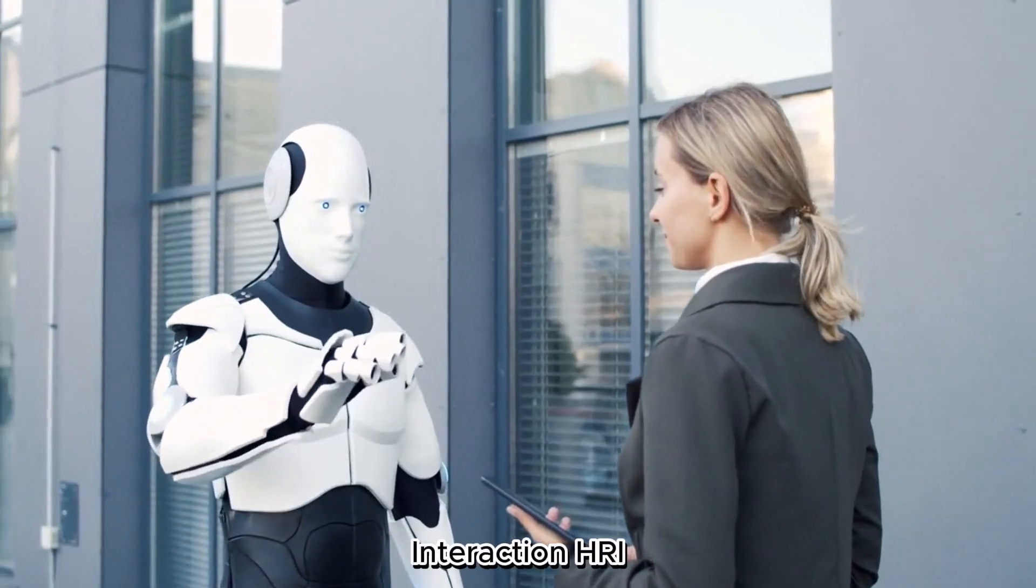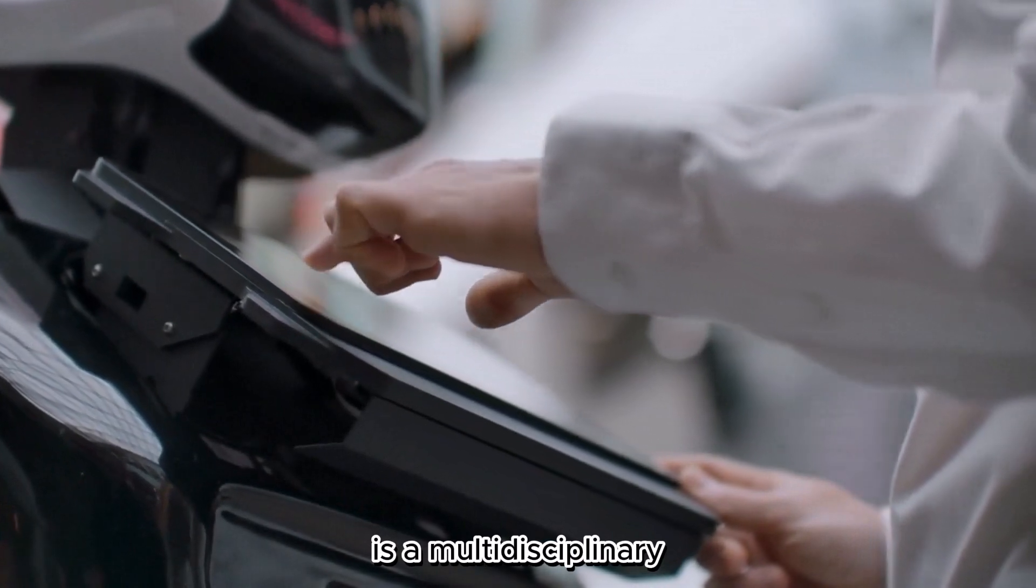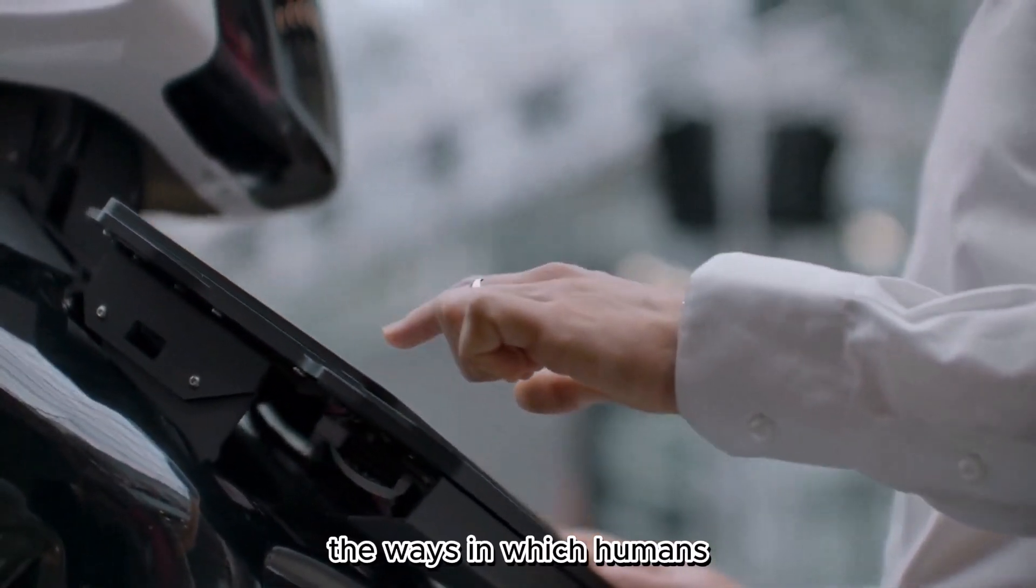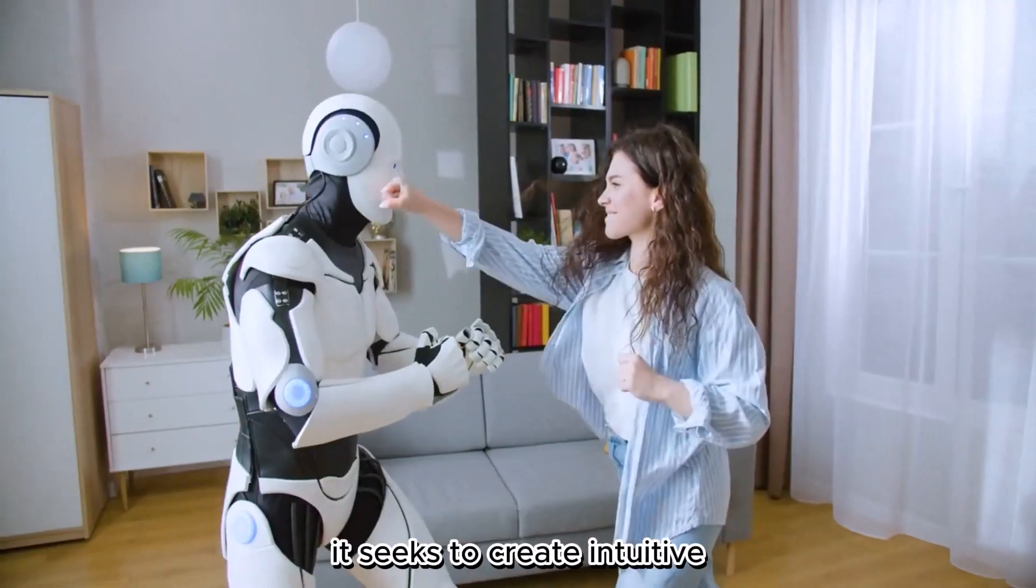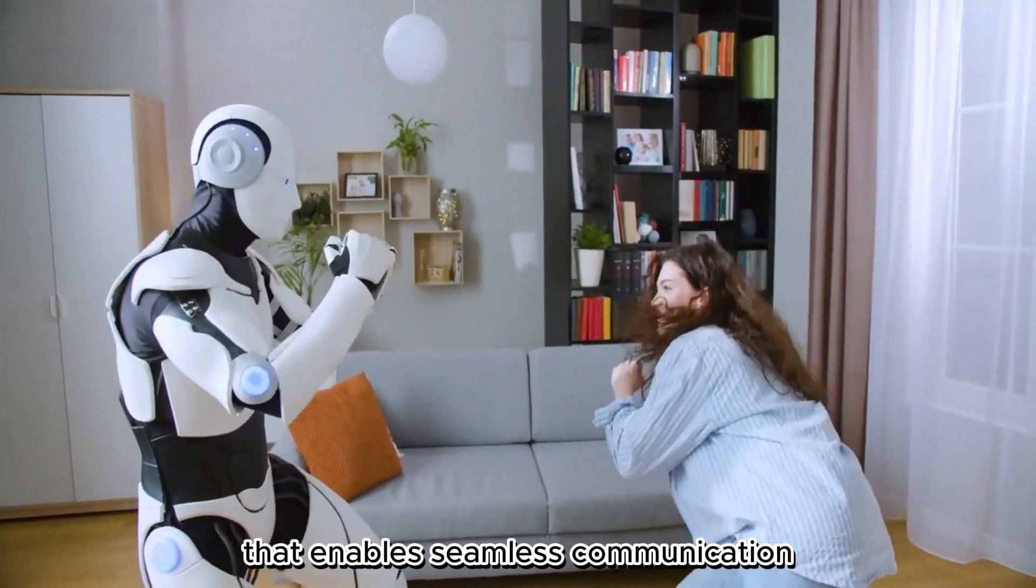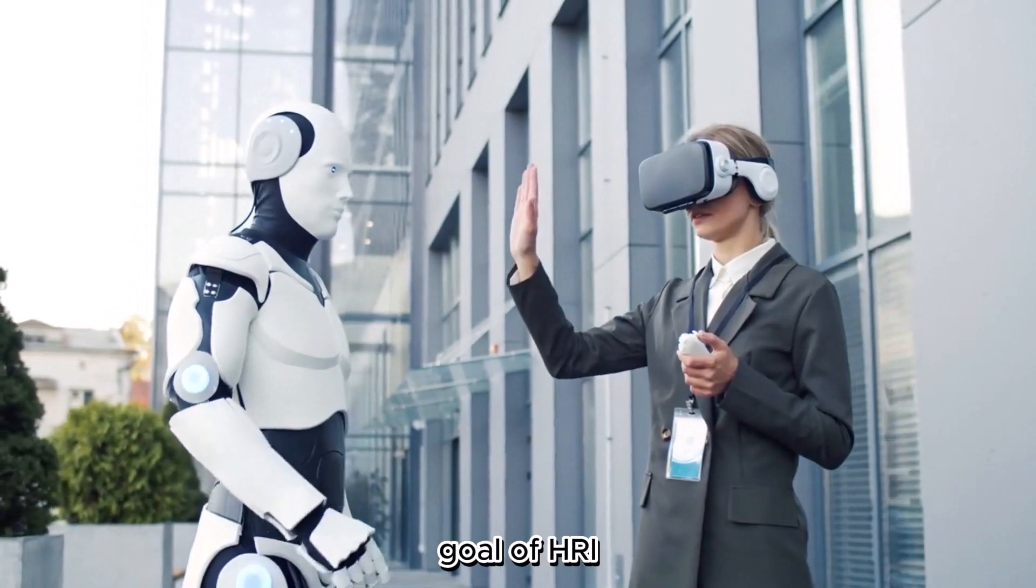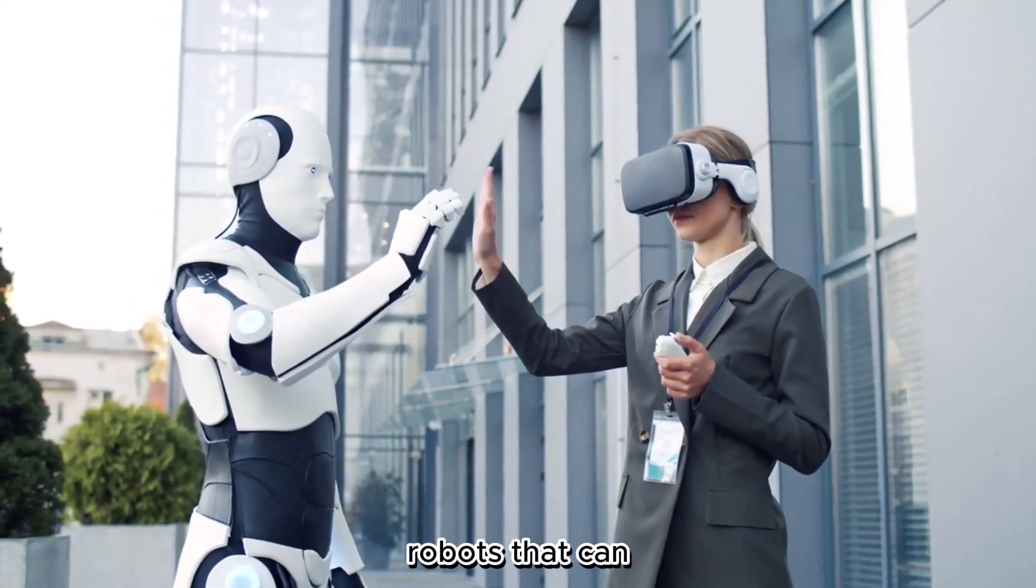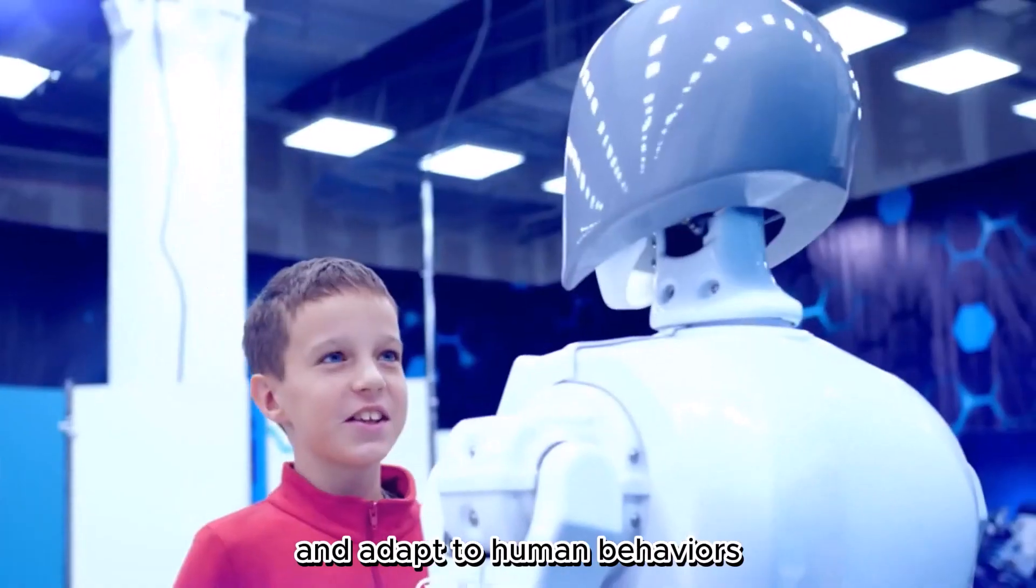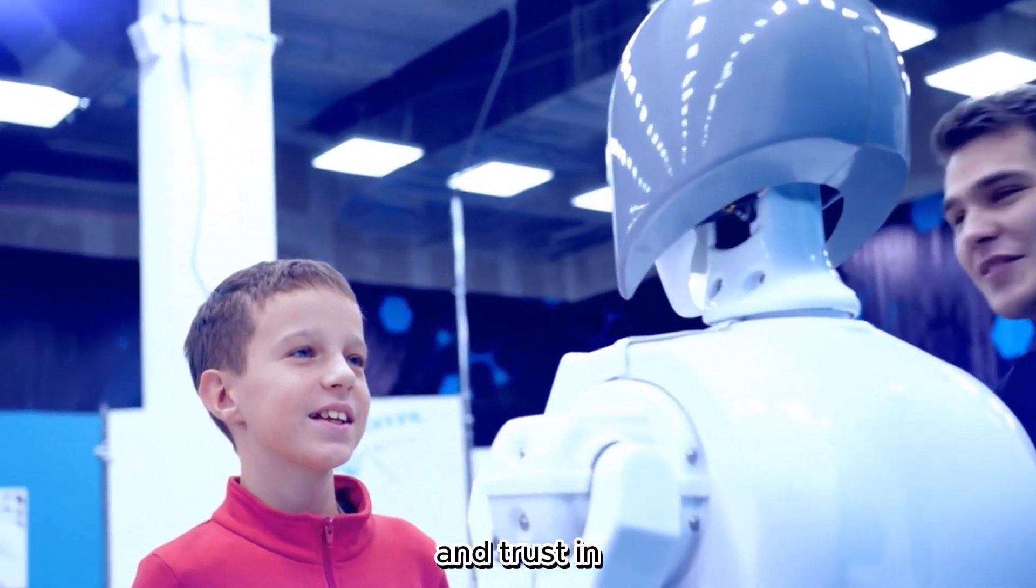Human-Robot Interaction. Human-Robot Interaction is a multidisciplinary research area that focuses on understanding and improving the ways in which humans and robots interact and collaborate. It seeks to create intuitive, natural, and efficient interfaces that enable seamless communication and cooperation between humans and robots. The ultimate goal of HRI is to develop robots that can understand human intentions, respond appropriately to human commands, and adapt to human behaviors, thereby enhancing user satisfaction and trust in robotic systems.